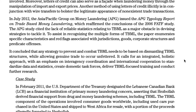In 2012, the Asia/Pacific Group on Money Laundering (APG) issued a typology report on trade-based money laundering, reaffirming the 2006 FATF conclusions. The APG study cited the lack of reliable statistics on TBML as a major obstacle in devising strategies to tackle it. It identified red flags associated with jurisdictions, goods, corporate structures, and predicate offenses. The report called for an integrated, holistic approach emphasizing coordination and international cooperation to standardize data, create domestic task forces, deliver TBML-focused training, and conduct further research.